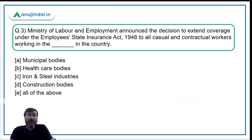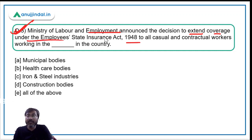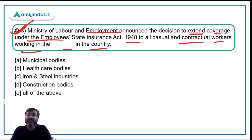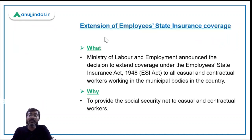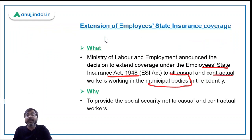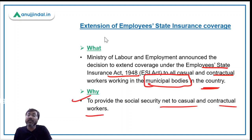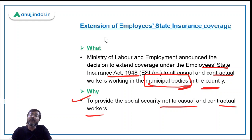Let's move to question number three. The Ministry of Labor and Employment announced the decision to extend coverage under the Employees' State Insurance Act, 1948 to all casual and contractual workers working in municipal bodies across the country. This decision was taken to provide a social security net to casual and contractual workers working in municipal bodies.